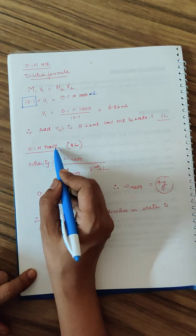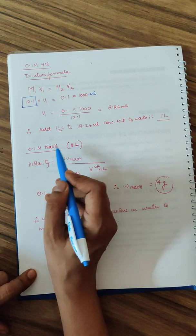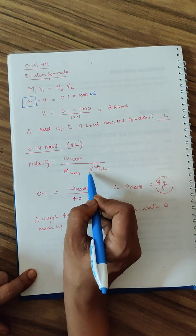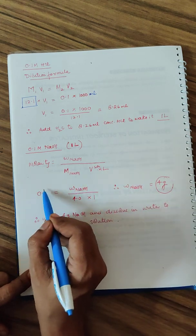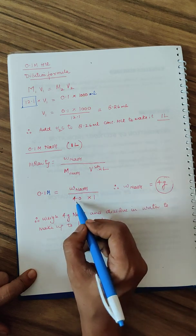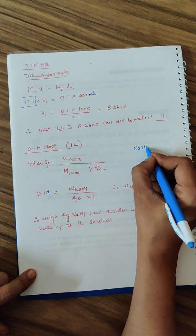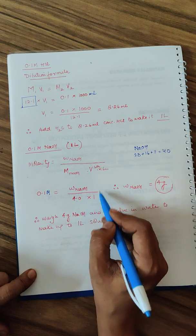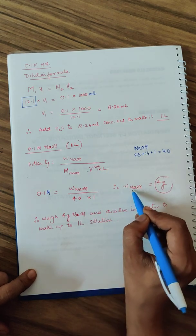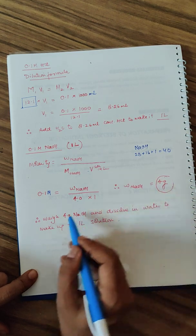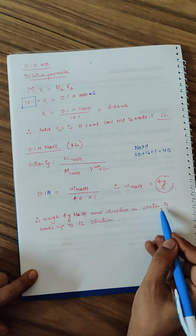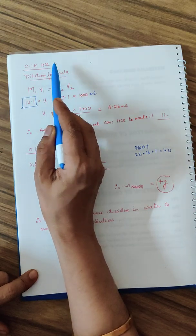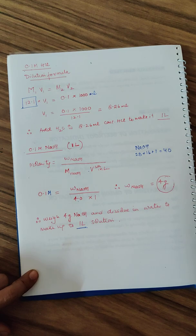0.1 molar NaOH - NaOH is not by dilution formula because you get it in solid form. The formula we use is molarity equals weight of NaOH needed upon the molecular mass of NaOH divided by volume of solution in liters. You are requiring 0.1 molar, 40 is the molecular mass of NaOH (23 plus 16 plus 1). Volume is 1 liter. The weight of NaOH that you require is only 4 grams. So you weigh 4 grams of NaOH and dissolve it in water to make it up to 1 liter.